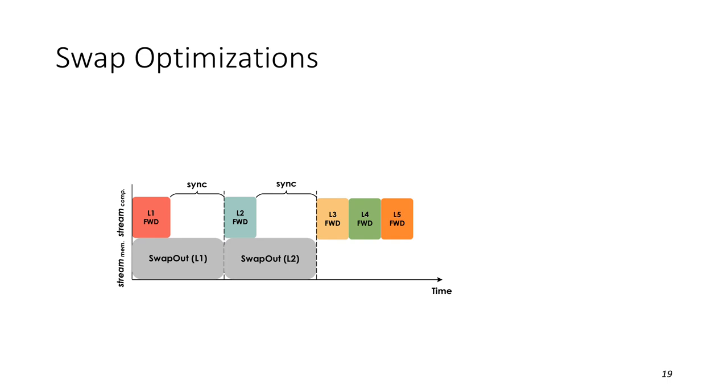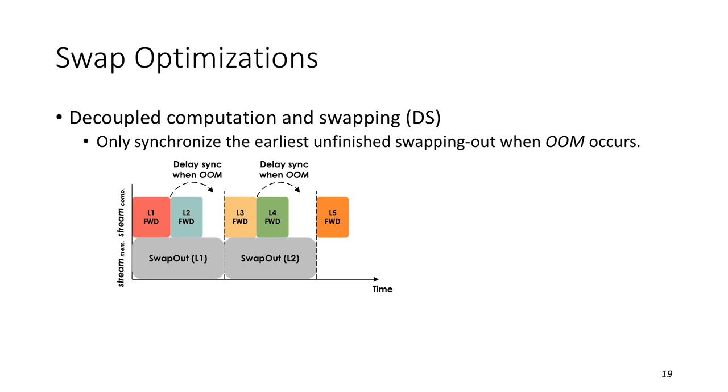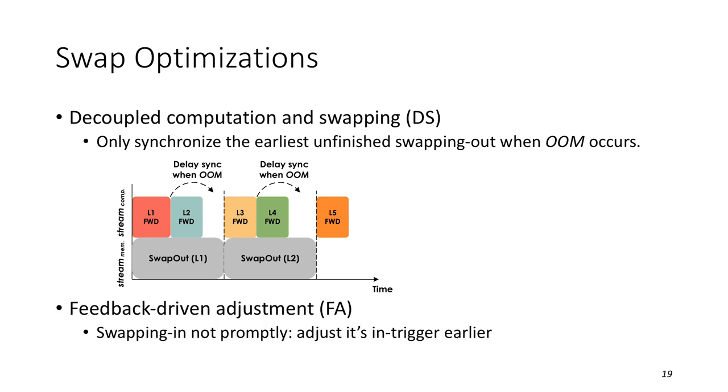We also introduced some optimizations to reduce overhead. For swap, the data transfer and computation are coupled together in prior works, which means the next computation can only start when current computation that uses this tensor and this tensor swapping out both finish. Here, L2 forward computation can only start when L1 forward computation and swap out L1 both finish. However, all the next computations including current computation that uses this tensor can be performed concurrently with tensor swapping out. So, we only synchronize the earliest unfinished swapping out when out of memory occurs. In this way, the overhead of swapping out can be significantly reduced. In swap in, we get the runtime feedback at the back access of a tensor. If the tensor is still being swapped in, it means the integral time can be adjusted earlier.